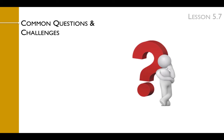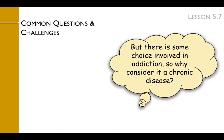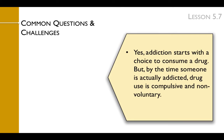Students often ask for more details about addiction as a chronic disease — you can find more in the Teacher Primer, Teacher Manual, and Student Workbook. One of the most common questions teachers get is: there is some choice involved in addiction, so why consider it a chronic disease? Yes, addiction starts with a choice to consume a drug, but by the time someone is actually addicted, drug use is compulsive and non-voluntary.